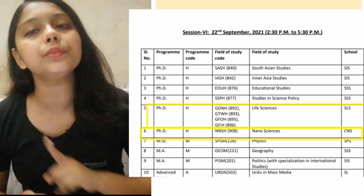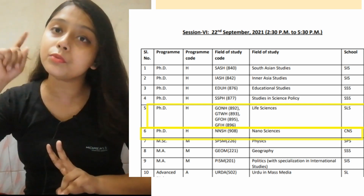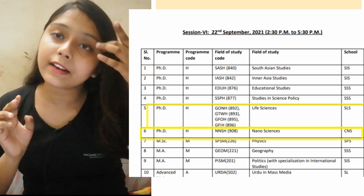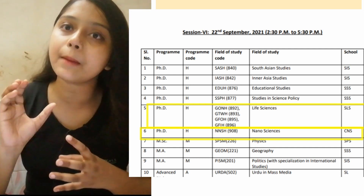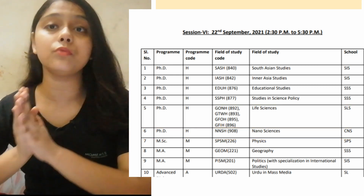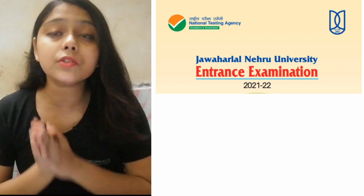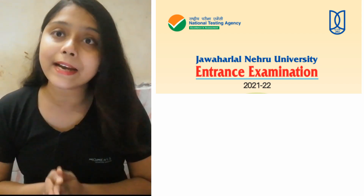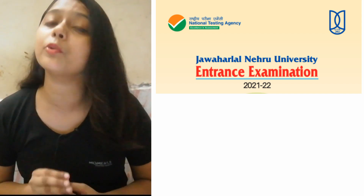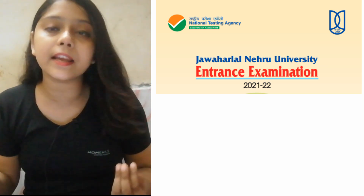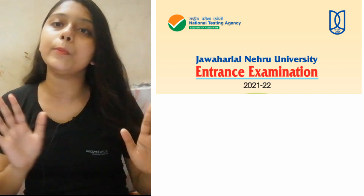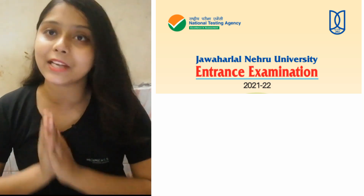If you want to fill one, that is okay. If you want to fill two, you have to choose between School of Life Science and School of Nanoscience — you can't choose both because the timing is the same. If you want to fill 3 choices, you can choose School of Life Science or Nanoscience, plus Molecular Medicine and Biotechnology. You have to keep this in mind, otherwise your fees will go and you will not be able to give the exam.